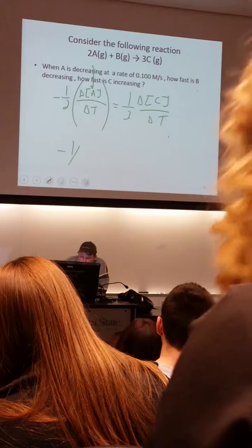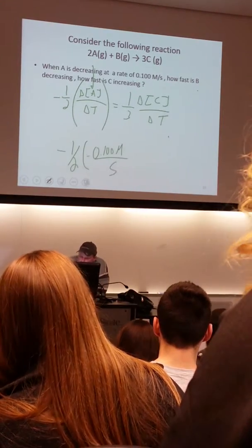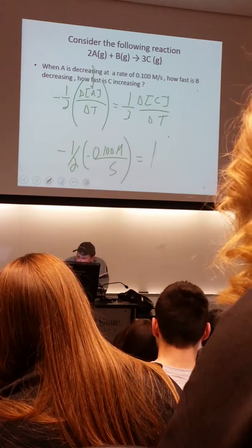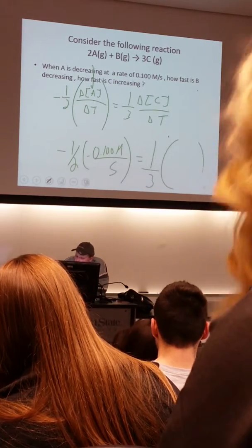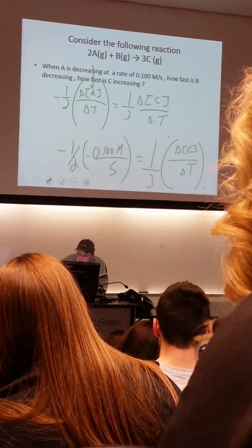So 1 half times 0.100 molarity per second equals 1 over 3, and I'm solving for the rate of appearance of C.